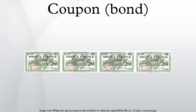A coupon payment on a bond is a periodic interest payment that the bondholder receives during the time between when the bond is issued and when it matures. Coupons are normally described in terms of the coupon rate, which is calculated by adding the total amount of coupons paid per year and dividing by the bond's face value.